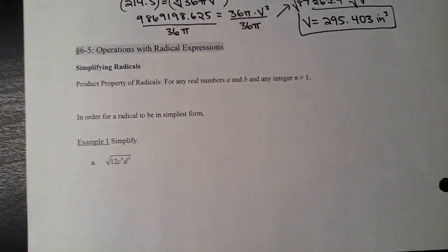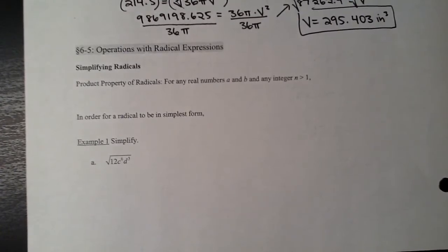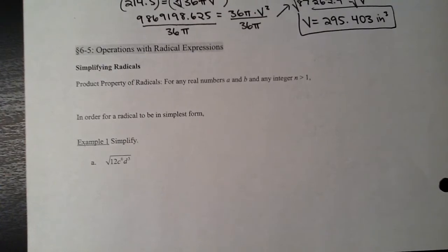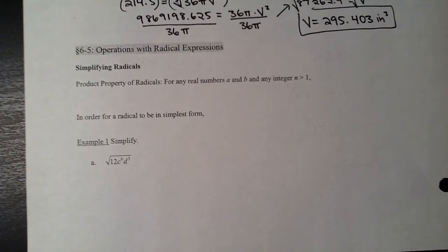We're coming off a video where we learned how to simplify radicals for the first time. In the previous lesson the radicals all simplified down perfectly - the radical was gone, nothing left underneath the radical sign. Today is a little different: we're going to simplify radicals down to a point where they still have things left underneath the radical sign. We're also going to look at operations - addition, subtraction, multiplication, and division of radicals.